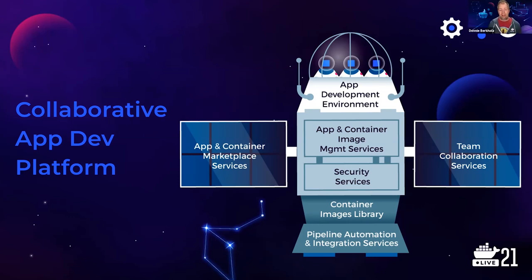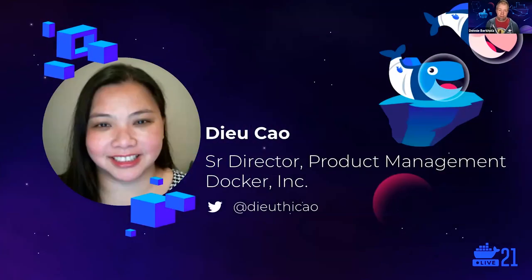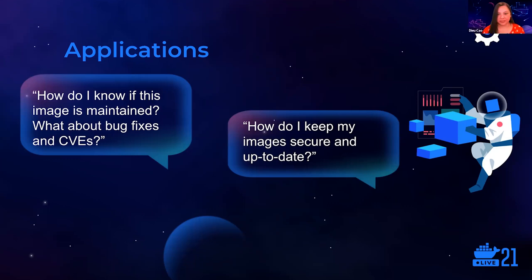To walk you through application development in more detail is our Senior Director of Product Management, Yui Cao. So let's talk about modern application development. When I talk to application developers about what a day in their life is like, there are some common problems they run into when looking for images to use — images to use as a base image, images that bring in a dependency like an agent or library, images of other apps and services to develop against. Many questions arise: How do I know if this image is maintained? Do they address bug fixes and CVEs? How do I know if I can trust that the image isn't cleverly named malware? How do I keep my image secure?